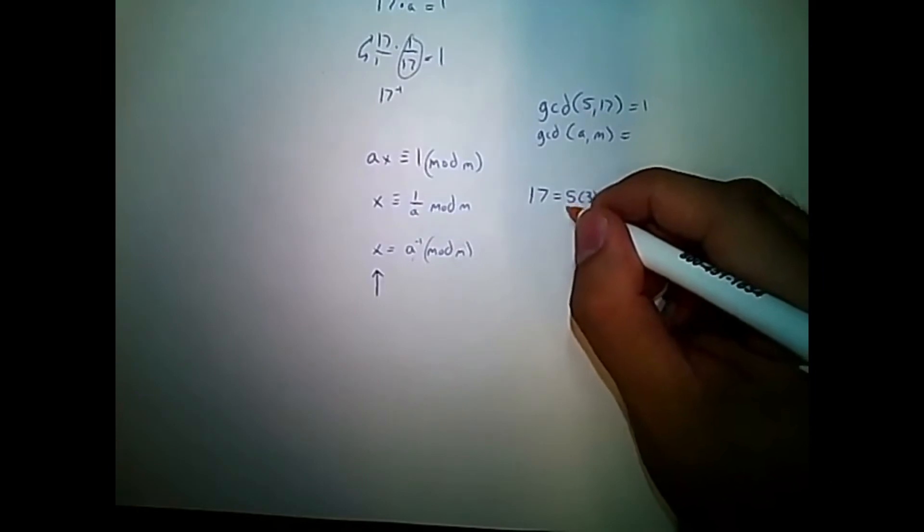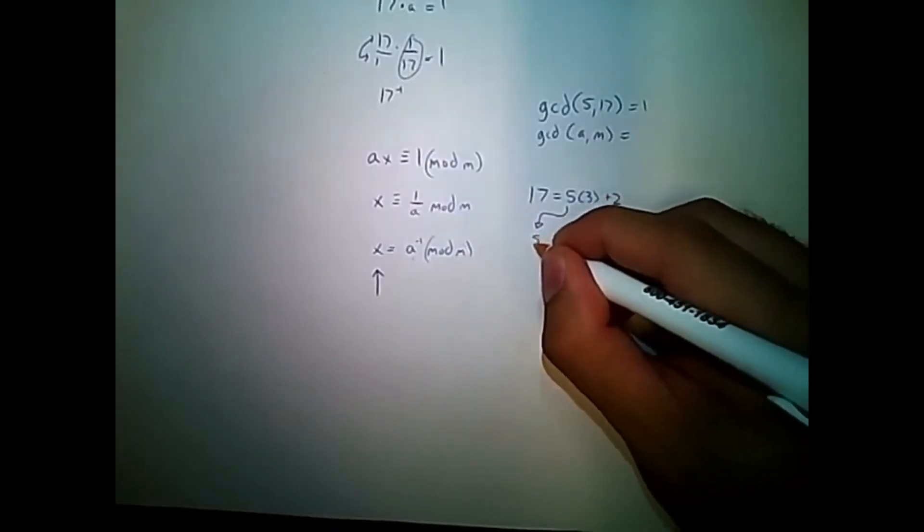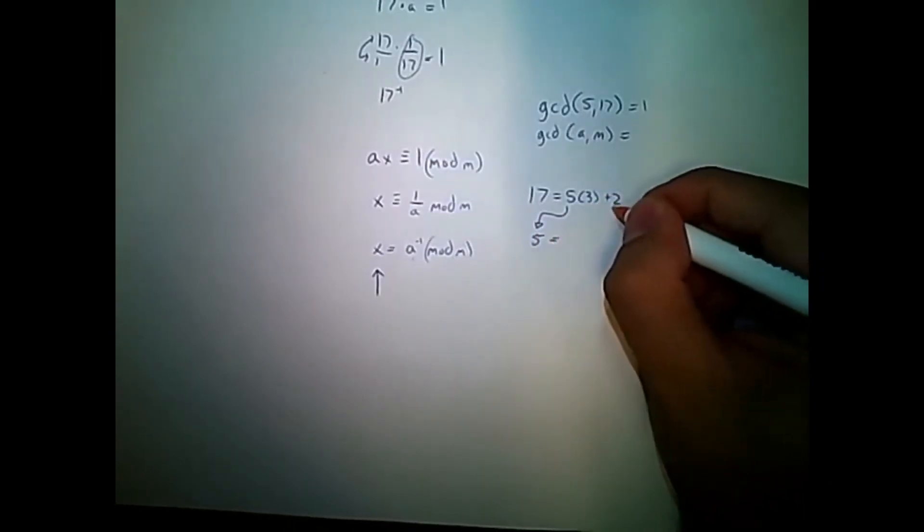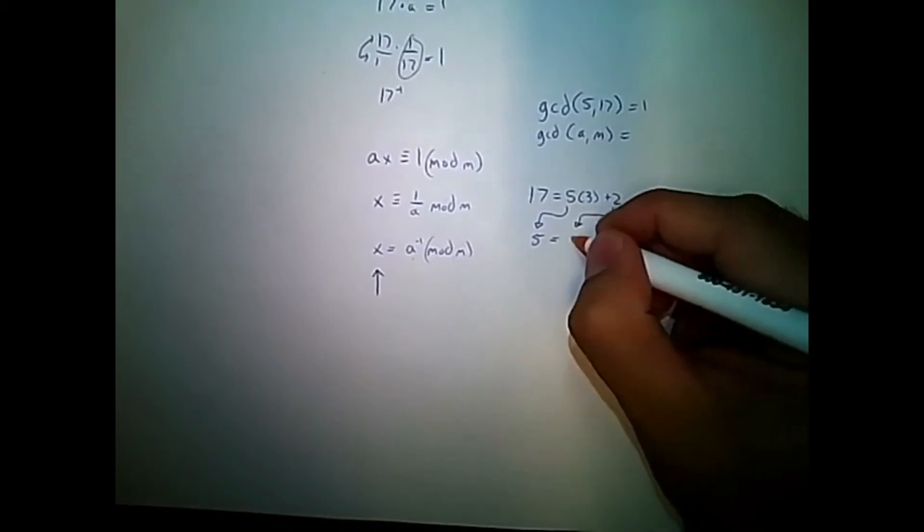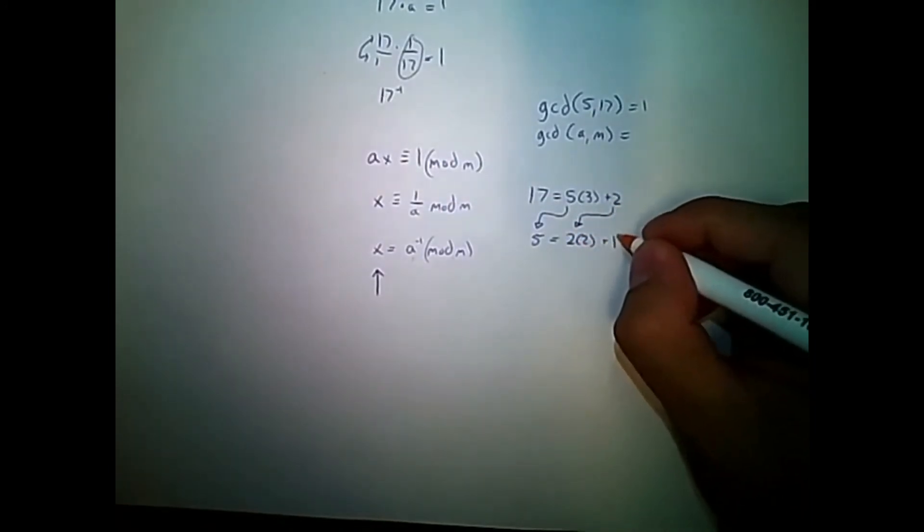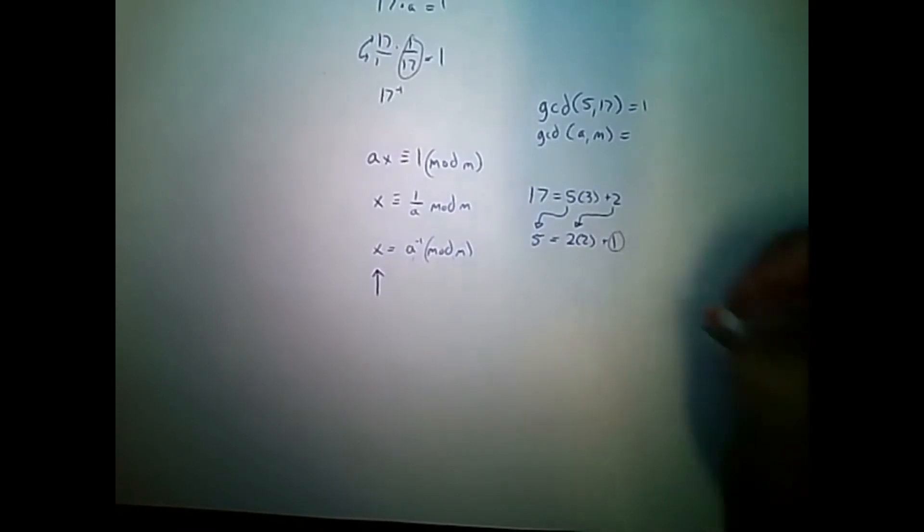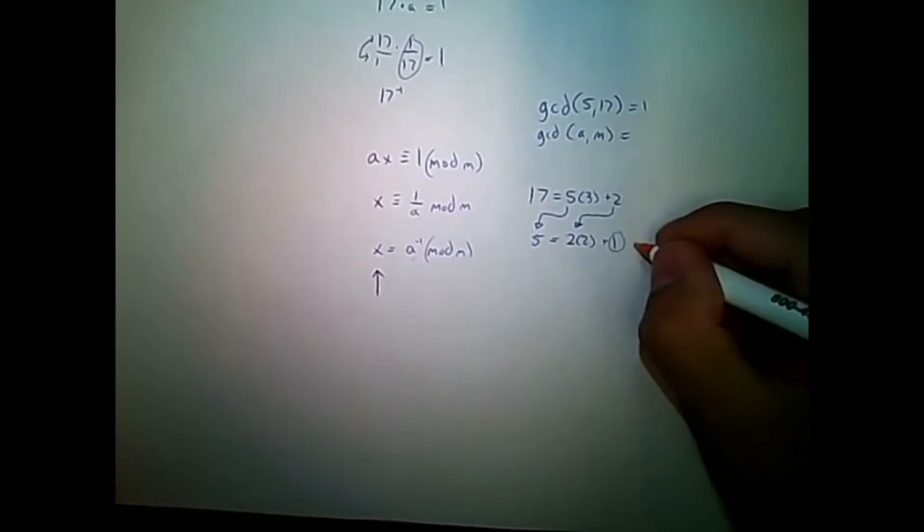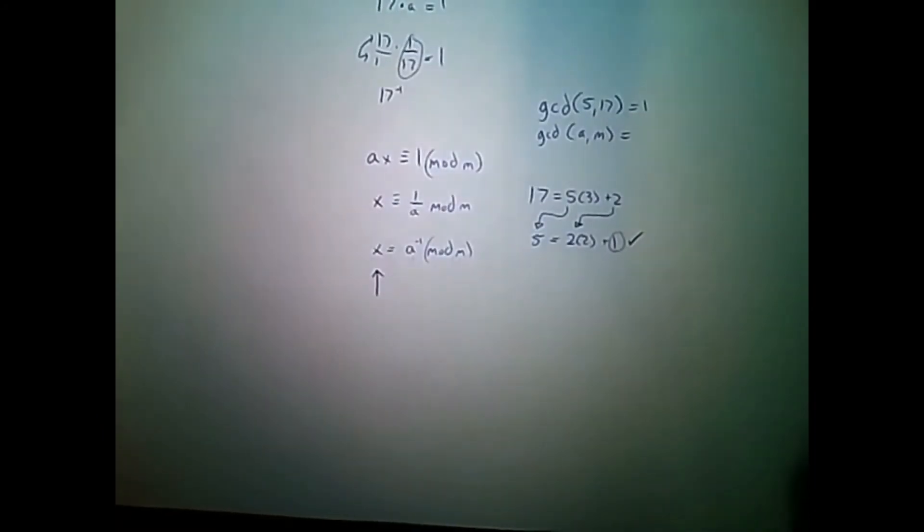And then we'll move on to the next step here. Shift over the 5, which is equal to, if I'm shifting over my 2, 2 times 2 plus 1. And we can actually stop here. This remainder here is our GCD of 1. So, great. We confirm that, yes, there is a multiplicative inverse.